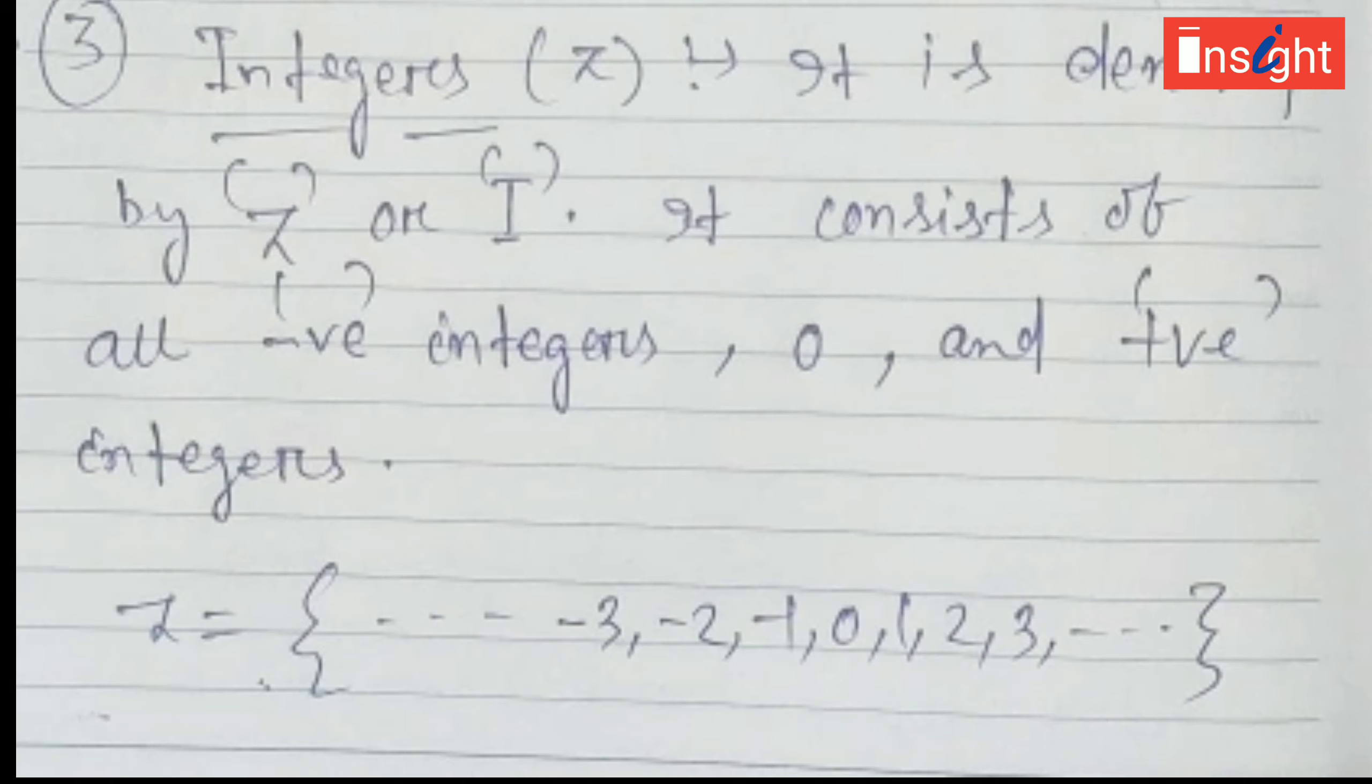The next is integers, denoted by capital Z or capital I. It consists of 0, all natural numbers, and all the negative numbers.